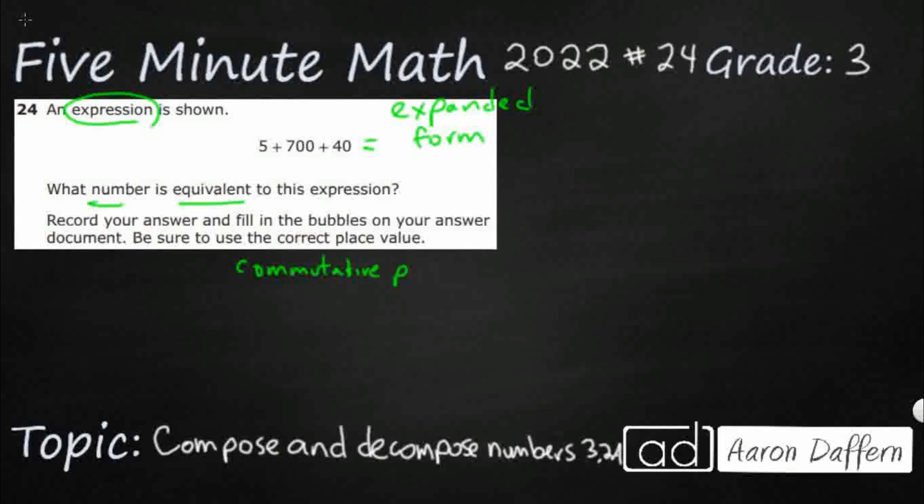The commutative property of addition lets us take the addends and rearrange them. So 7 plus 5, for example, is the same as 5 plus 7. You can add them in any order, which means I can rearrange this.